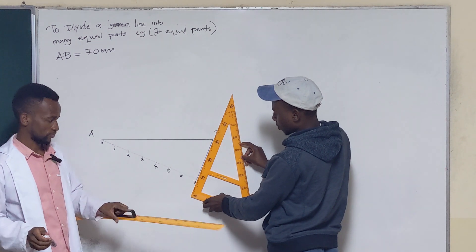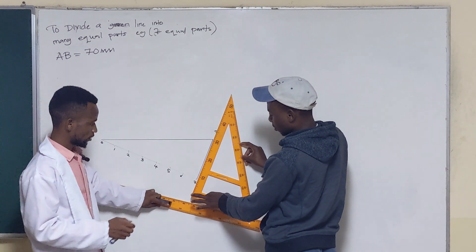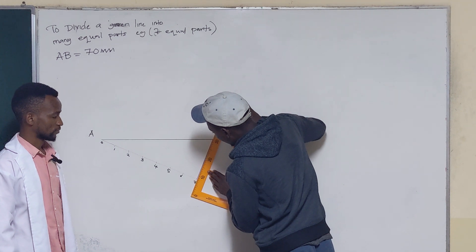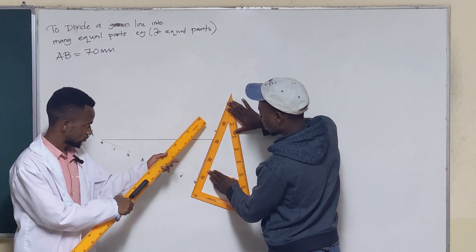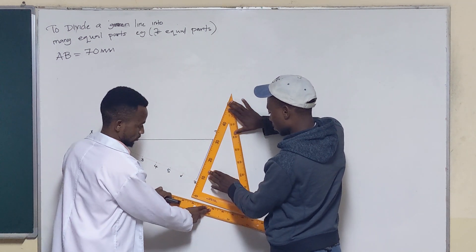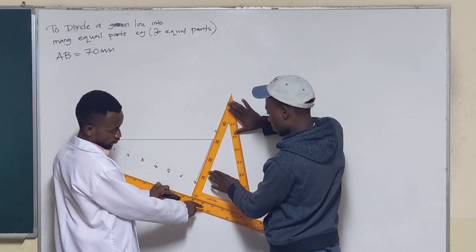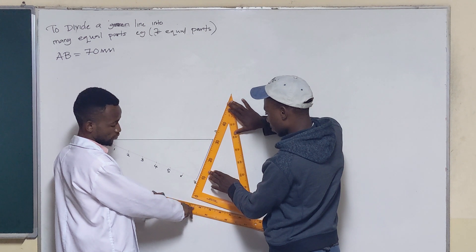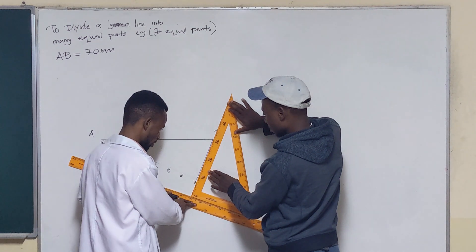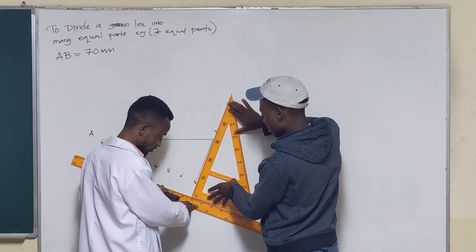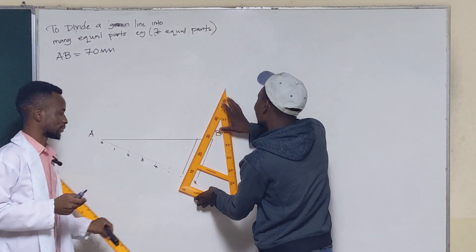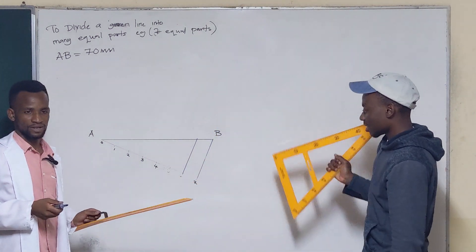After holding the locking edge firm, it is just a matter of sliding the set square now. Slide it to point 6. Have you seen the way these lines are looking? They are parallel.